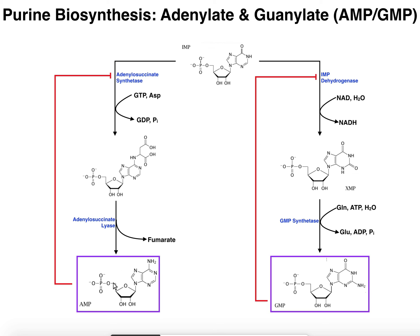This is another way of providing balance. If I have plenty of A's floating around, I have both AMP and ATP. The AMP will inhibit its own synthesis, but the ATP that forms is actually going to be used in GMP synthetase to make more GMP. And the reverse is also true — if I've got plenty of G's, I have both GMP and GTP. The GMP will inhibit its own synthesis, but the GTP can actually help form more AMP via adenylosuccinate synthetase. So this is a really nice way of balancing the two purines.